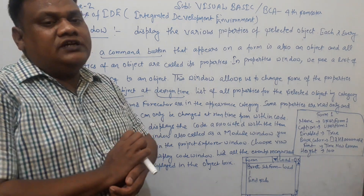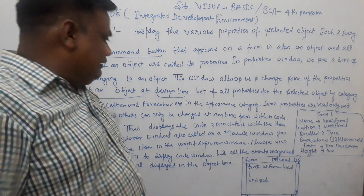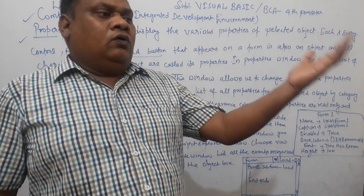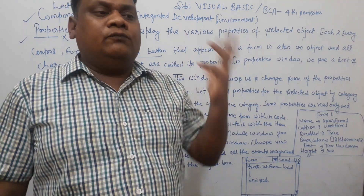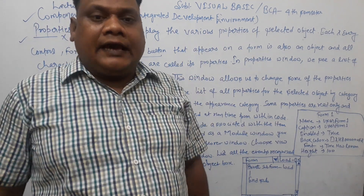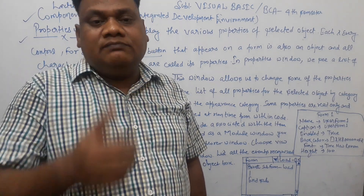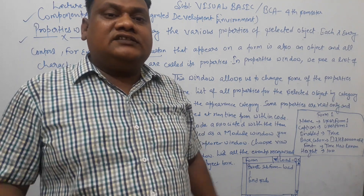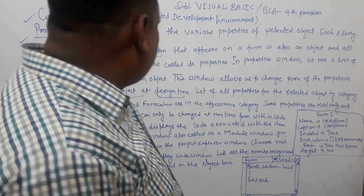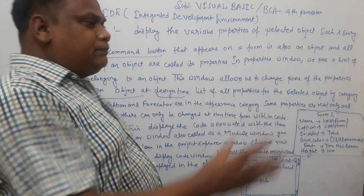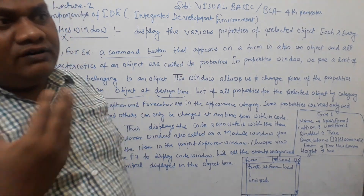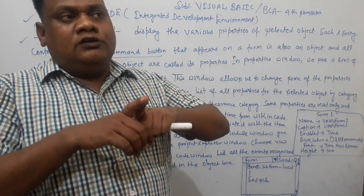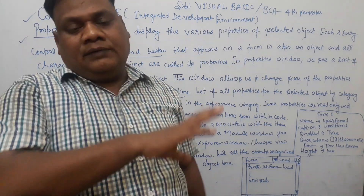Now we have the Form Layout Window. The Form Layout Window shows us how to position and maximize all the controls in the form. It displays how the form will appear at runtime, so we can arrange the form's position on screen.